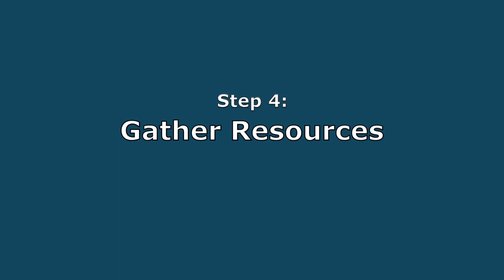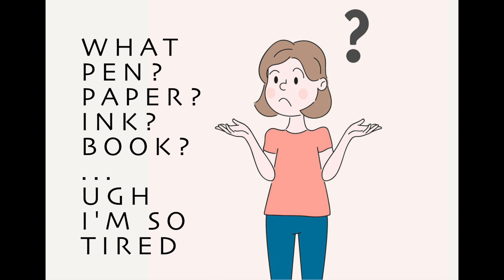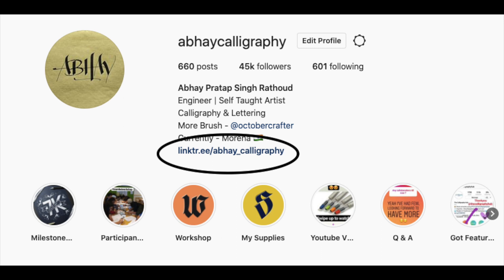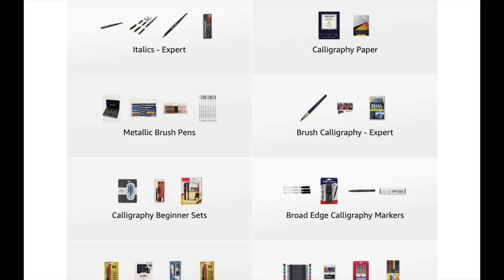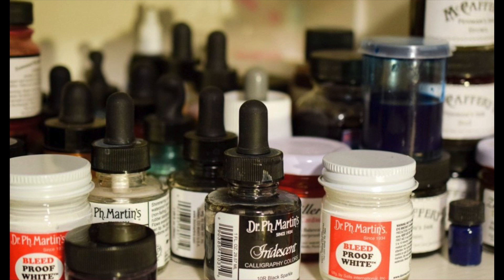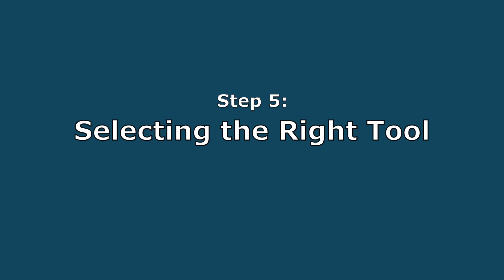Step 4: gather resources. This step is very important. Till now you have selected the script and the artist, but not the tool to write. Do some research — find out what tools, papers, inks, and books are used by other artists. For example, I provide information about each pen I've used in creating a particular post. You can also visit the link in my bio to see all my recommended supplies and purchase them according to your budget and expertise level. It is recommended to gather information from multiple artists since calligraphy supplies are expensive and you don't want to purchase something that is of no use.